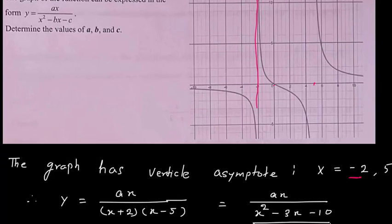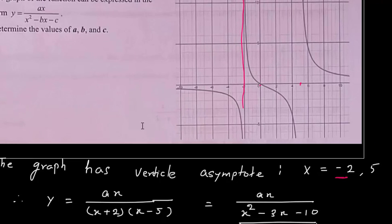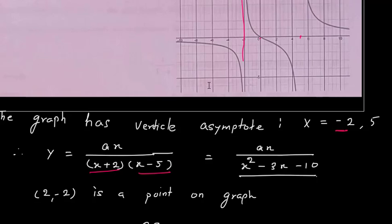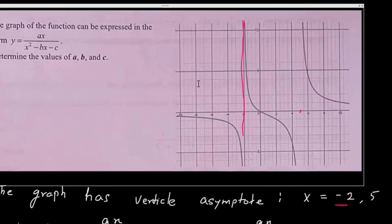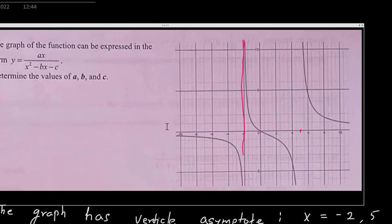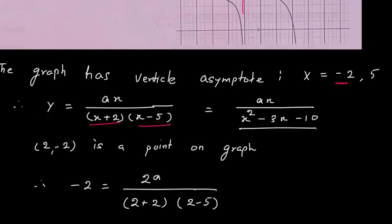So x = -2 and x = 5 are the asymptotes. As these are the asymptotes, (x+2) and (x-5) are going to be factors in the denominator. The numerator is ax and the denominator is written in factor form, because here we have a quadratic x². After simplification, I got x² - 3x - 10.